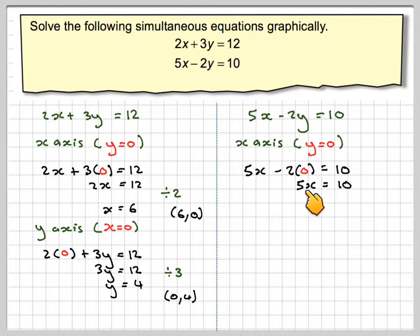The opposite of multiplying by 5 is to divide both sides by 5, and then we get that x equals 2. So that gives the coordinate (2, 0).